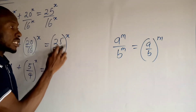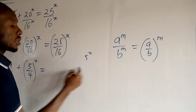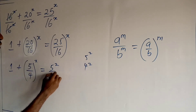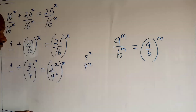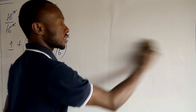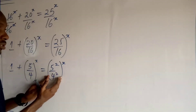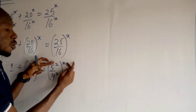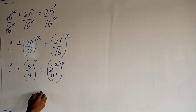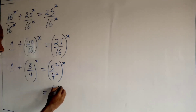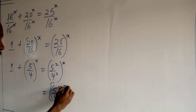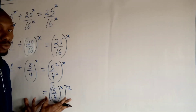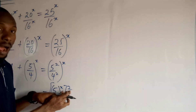Now looking at the right-hand side, nothing can divide in 25/16, but we can write 25 as 5 squared and 16 as 4 squared. So this becomes 5 squared upon 4 squared, all to the power x. Applying the same exponent law, since these two have the same power, this becomes 5 upon 4 all to the power x, then all to the power 2. The reason for this is that I really want to make this look in the form of a quadratic equation, so I'm putting the power 2 outside.